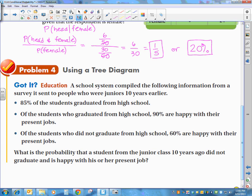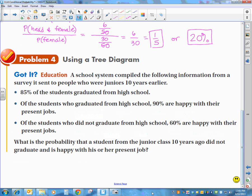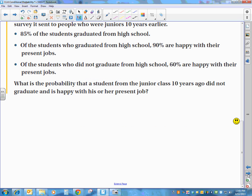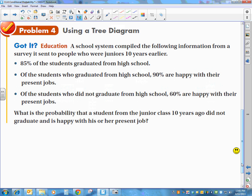The last example we're going to talk about is a tree diagram. And sometimes tree diagrams are easier to use and figure out than using the formula. So we're going to kind of do it instead of the formula. A school system compiled the following information from a survey it sent to people who were juniors 10 years earlier. 85% of the students graduated from high school. So of those juniors that I had, I had those that graduated and those that did not graduate.